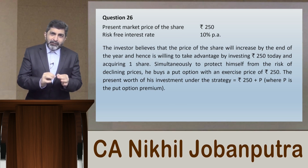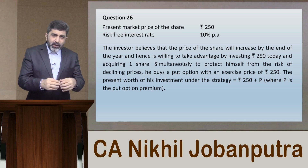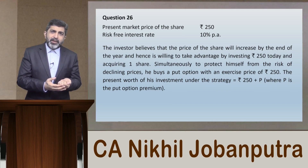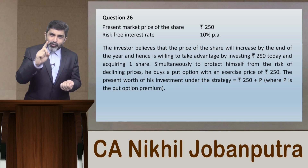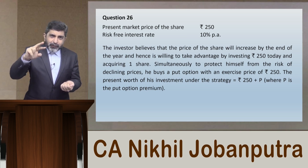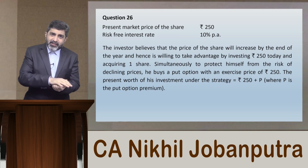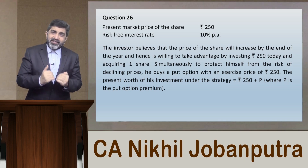If the price of the share falls down to 200, you will be able to sell the share for 200 only, realizing Rs 200. But because you are holding a put option which gives you the right to sell the share at the exercise price of Rs 250, and the prevailing market price is only 200, that differential of Rs 50 comes to your pocket. So you will realize a minimum value of Rs 250, no matter even if the price declines.